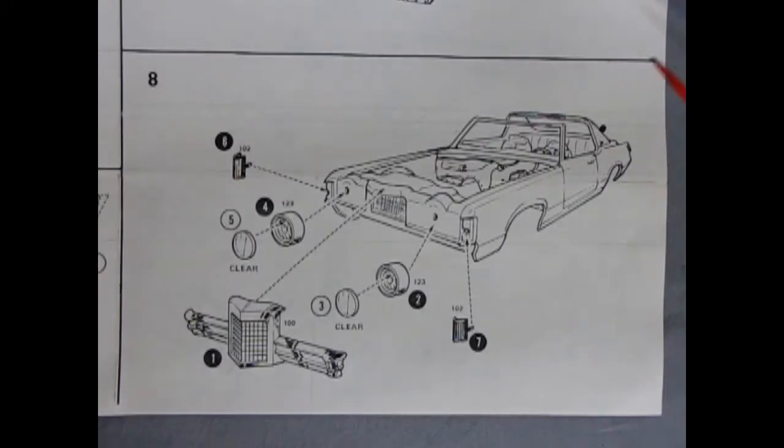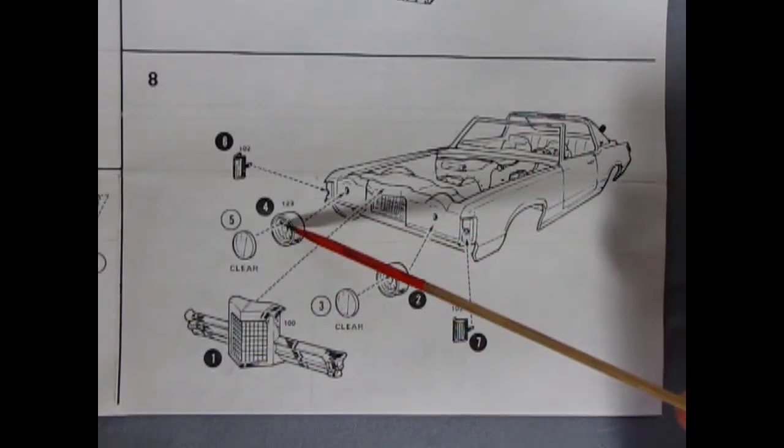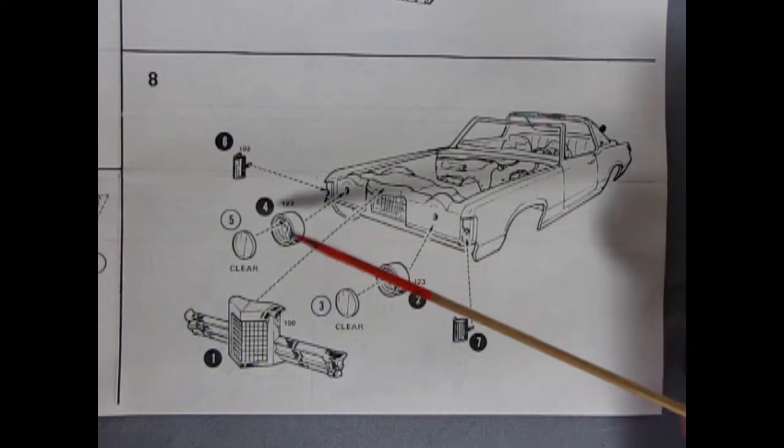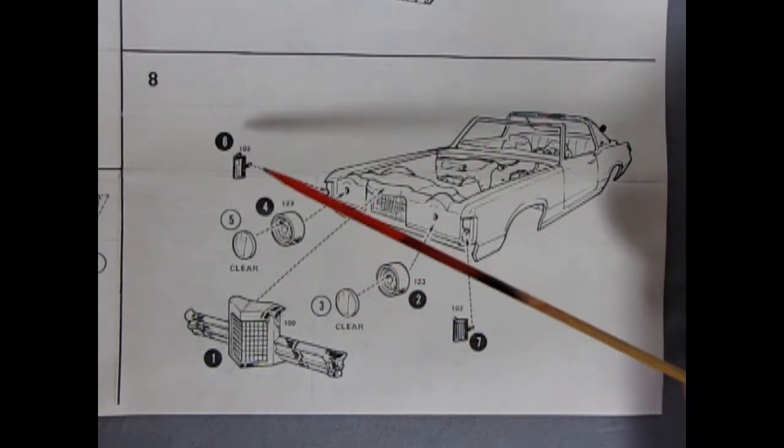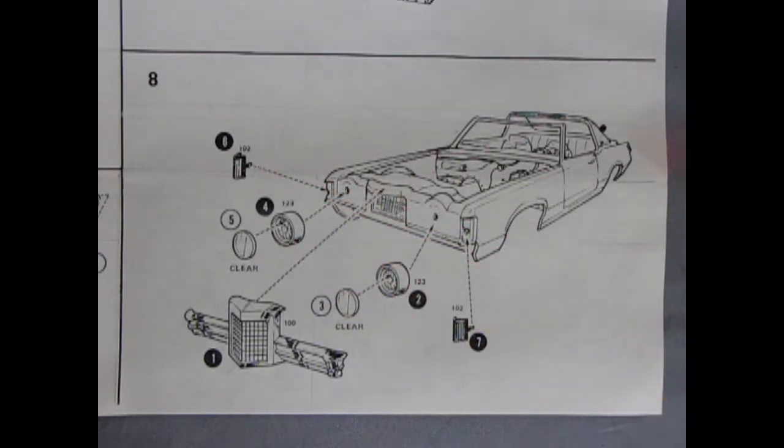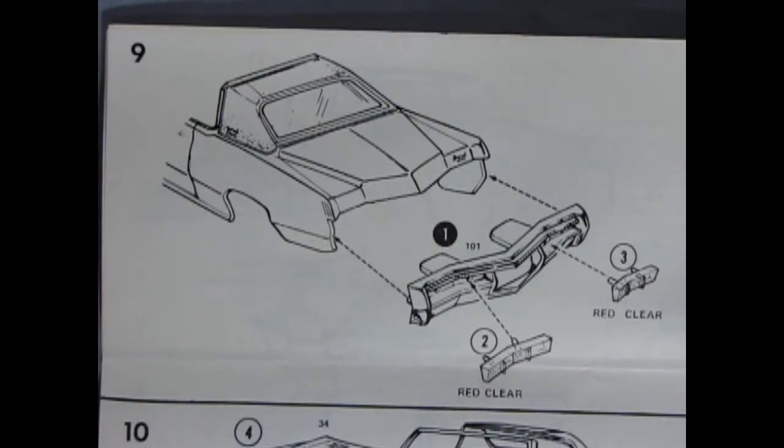Panel 8 shows the front grille being inserted as well as these nice big headlight rings and our headlights and then we have our side markers going in the front. Out back we have our rear bumper gluing into place and you also install the red tail lights and I do believe you paint one of these clear as a backup light.